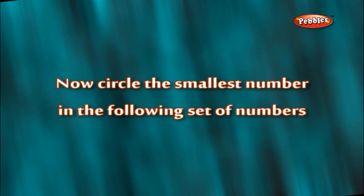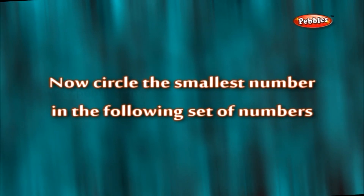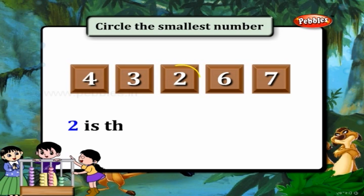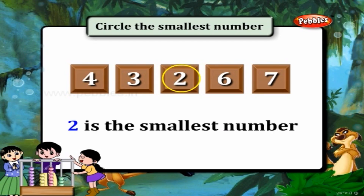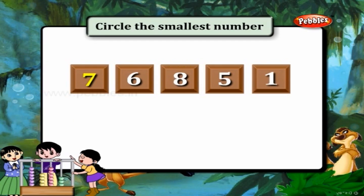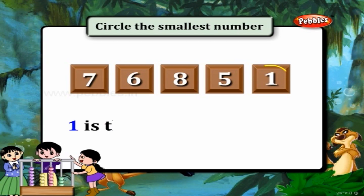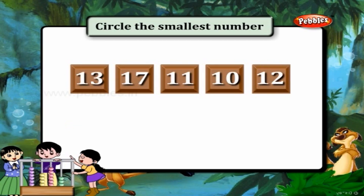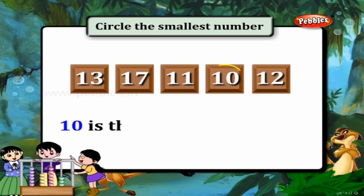Now circle the smallest number in the following set of numbers. 4, 3, 2, 6, and 7. Here, 2 is the smallest number. Next set: 7, 6, 8, 5, and 1. Yes, 1 is the smallest number. Next set: 13, 17, 11, 10, and 12. Here, 10 is the smallest number.